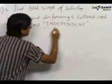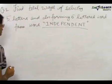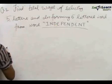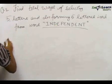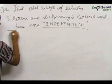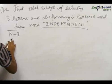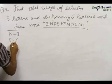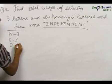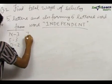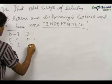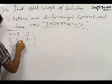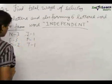First, we'll figure out what different letters this word has. The word 'INDEPENDENT' has three N's, three E's, two D's, one I, one P, and one T — that is six distinct alphabets and eleven letters in total.